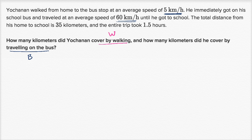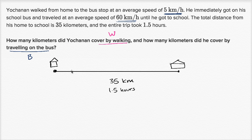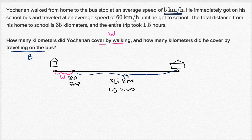So what do we know? I can even draw it just to make sure we're visualizing this. So this right over here is his home. And he is going to travel — they tell us it's 35 kilometers to school, so this is his school right over here. We know that this total distance is 35 kilometers. And he traveled at different rates for different distances. He walked some distance to the bus stop — that's the bus stop right over there. That distance is how much he covered by walking, so this distance right over here is W. And then the rest of the distance he covered by bus — all of that is going to be B.